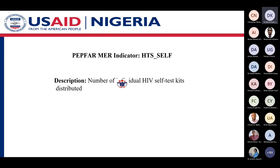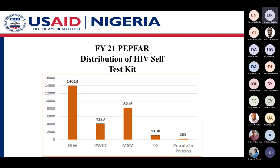Regarding a data-driven approach for HIV self-testing, there is one PEPFAR MER indicator — HTS self — which is the number of individual HIV self-test kits distributed. The focus is on the number of test kits distributed, and we do not go beyond this for PEPFAR reporting. In FY21, we actually distributed more self-test kits to female sex workers. The least number of kits went to people in prisons.